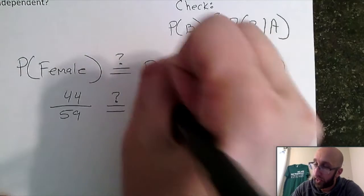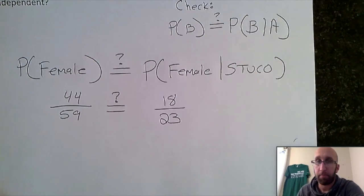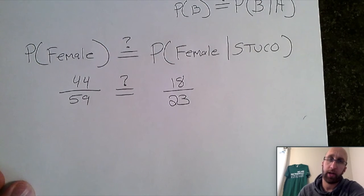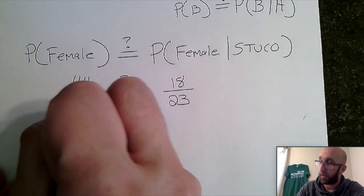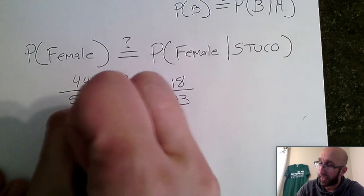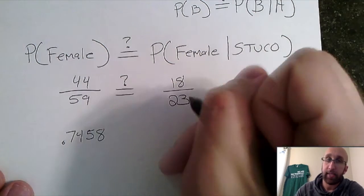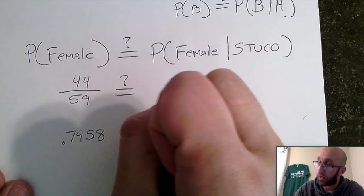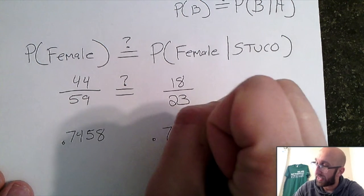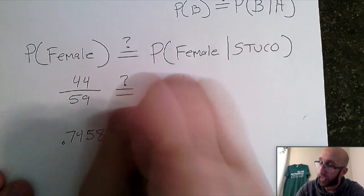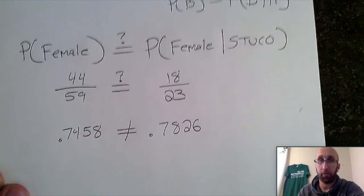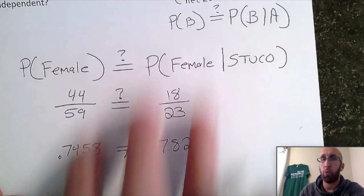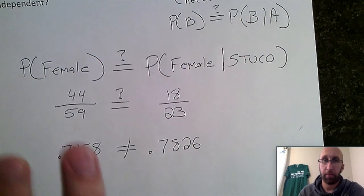So our fraction there is 18 over 23. Now it's going to be rather difficult to tell are these equal or not unless they're exactly the same fraction. Since they're different, what I would do is go to a calculator and figure out the decimal version of these. So 44 over 59, I already did that, but it's 0.7458. 18 over 23 is also a 0.7 but it's 0.7826. These are not equal to each other. So I've kind of done my work to try and mathematically show independence, but I kind of need to tie everything together.